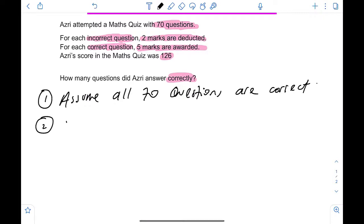Second step. If that is the case, what is the new total marks? Now, this will be 70 multiplied by 5. Why? Because all 70 are correct and for each correct ones, you get 5 marks. It's 350 marks.